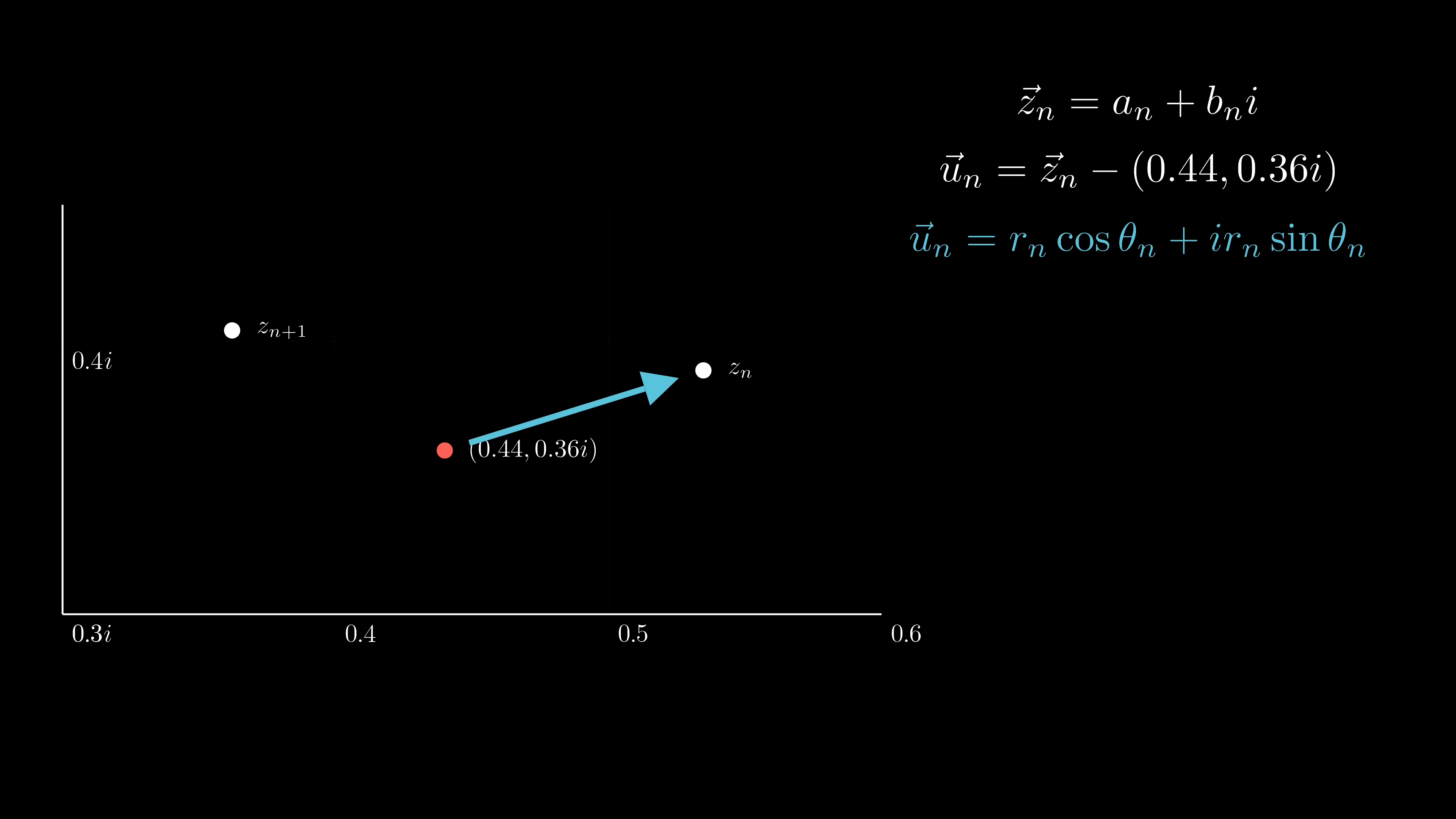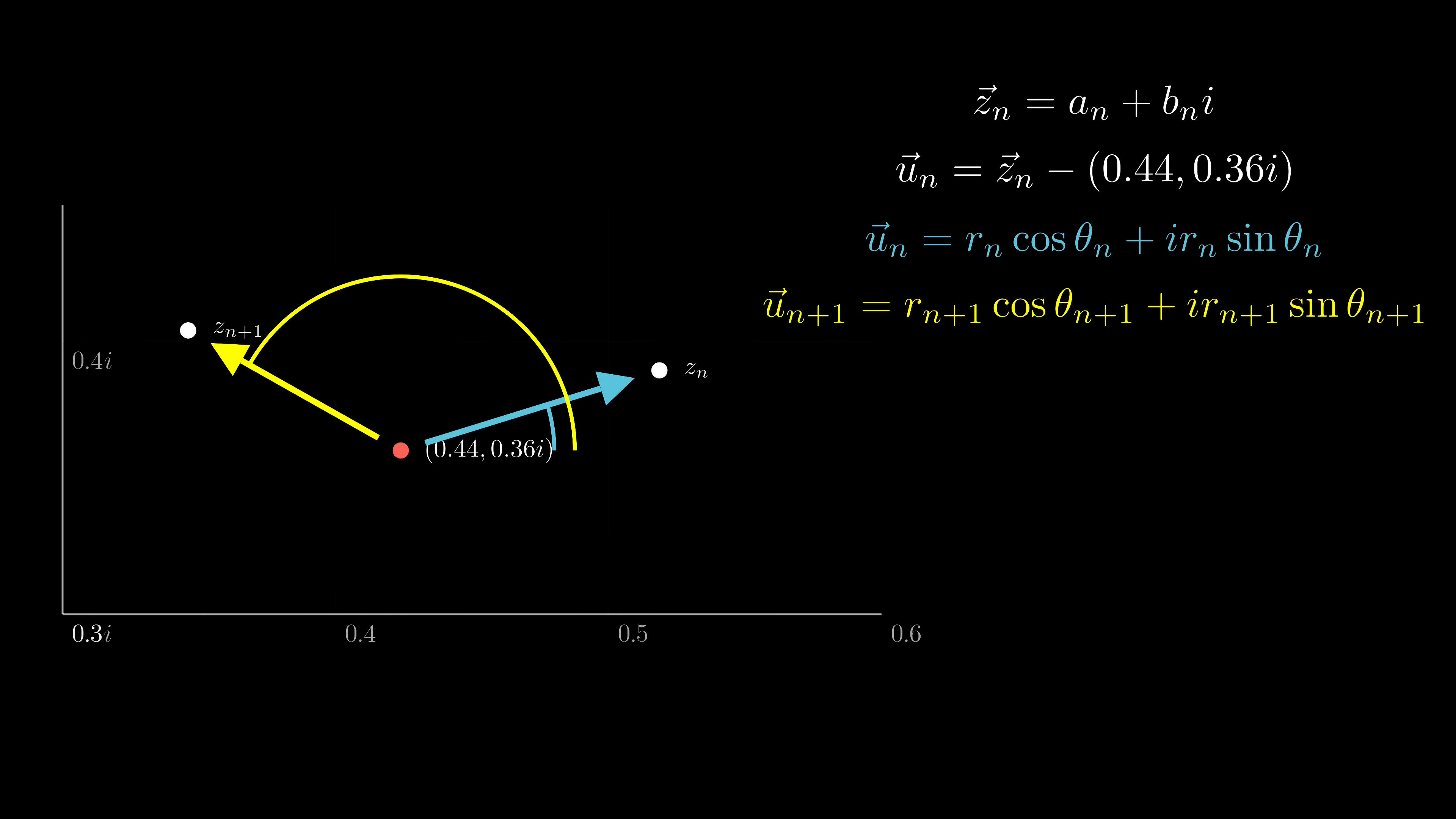Let me call this blue vector Un. Rn is its magnitude. Theta n is the angle between it and the positive x-axis. Similarly, we can define Un plus 1 just like Un. So everything is in yellow for Un plus 1. And our goal is to find the difference between theta n plus 1 and theta n.